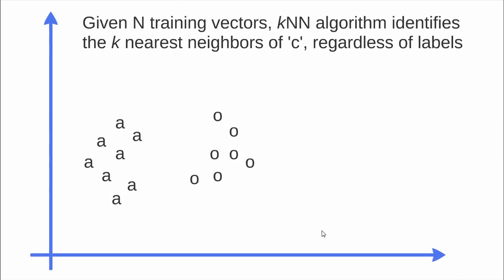It's a very simple algorithm. Given N training vectors, suppose we have all these A and O letters as training vectors in this two-dimensional feature space. The KNN algorithm identifies the K nearest neighbors of C.